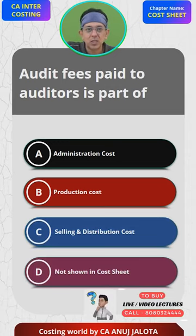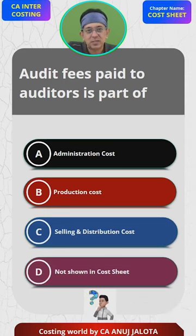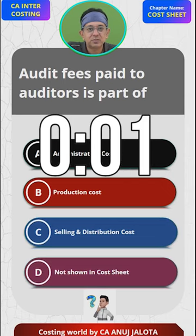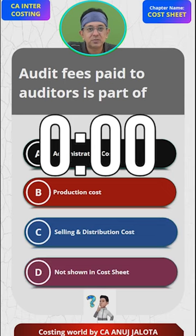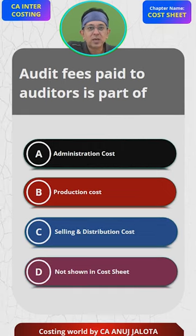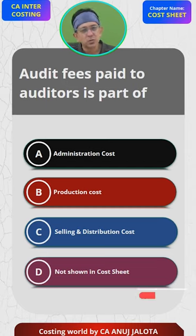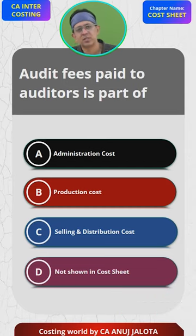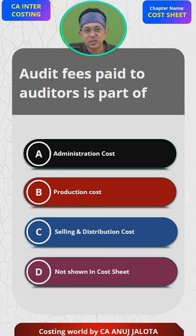Is the auditor going to be producing the product? No, so it does not form part of production cost. Is he a salesman to sell the products that the company makes? No, so therefore it is not selling and distribution cost. But it is a cost — it is not a financial cost, it is a normal cost.